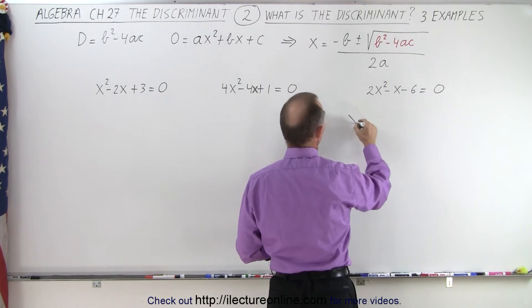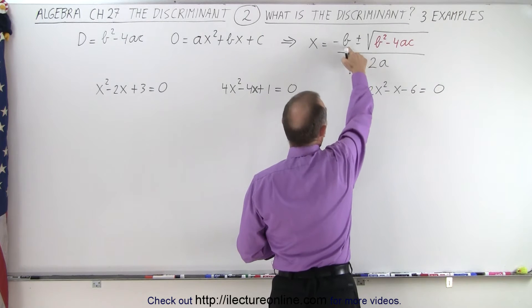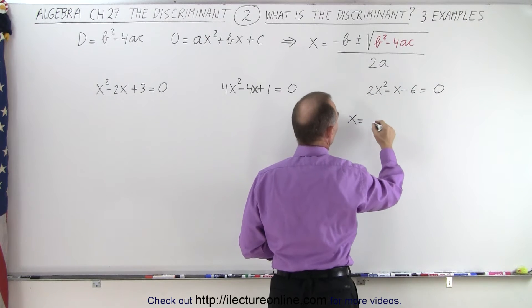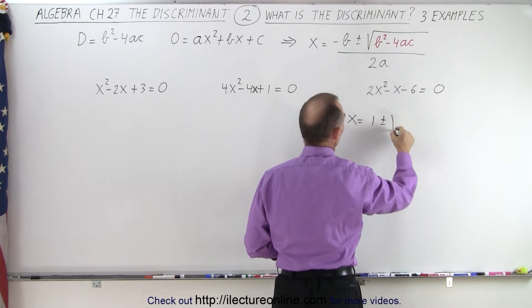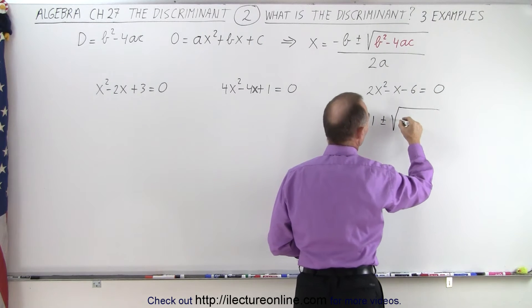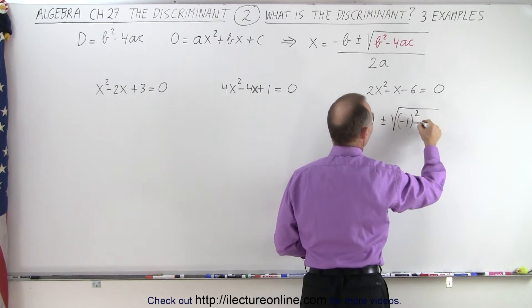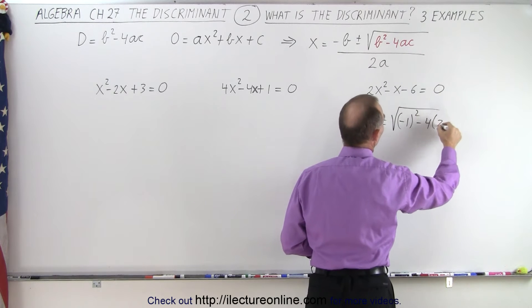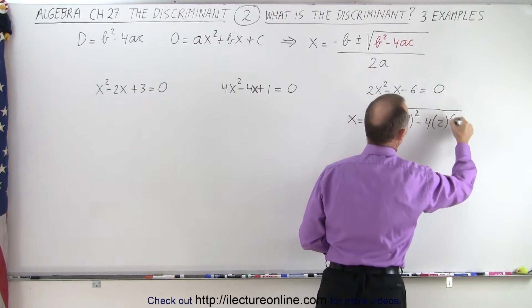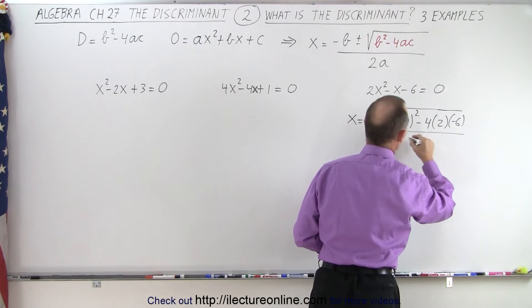In this case, x equals -b, the negative of this coefficient which is 1, plus or minus the square root of b², which is (-1)², minus 4 times a times c, which is -6, all divided by 2a.